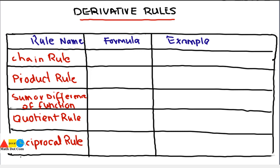First of all we have the chain rule. This rule is used basically for composite functions. The formula of this rule is dy/dx equals dy/du times du/dx. This is the formula, and it is used for composite functions.